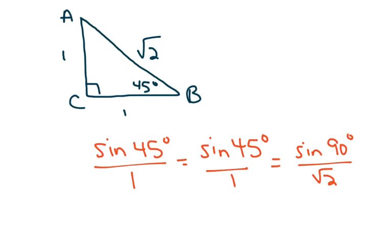In the 45-45-90 triangle, because it was isosceles, in geometry we learned to label the sides 1, 1, and square root of 2. The legs of the right triangle are both 1, and the hypotenuse is the square root of 2. The law of sines says that sine of angle A, which is 45, over side A, which is 1, must equal sine of angle B, which is 45, over side B, which is 1, must equal sine of angle C, which is 90, over side C, which is the square root of 2.